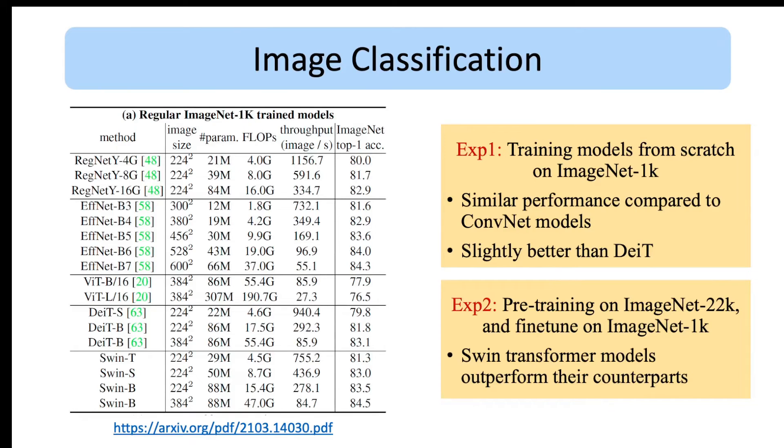For image classification they have conducted two sets of experiments. In the first set they train models from scratch on ImageNet-1K. But in the second set of experiments they pre-train models on a larger ImageNet-22K dataset which has 22,000 classes and 14.2 million samples. This table shows the results of the first experiment.